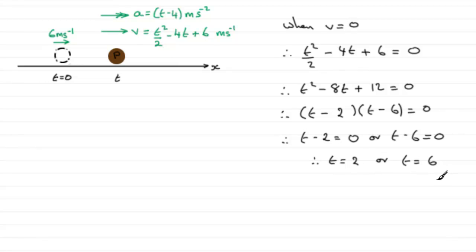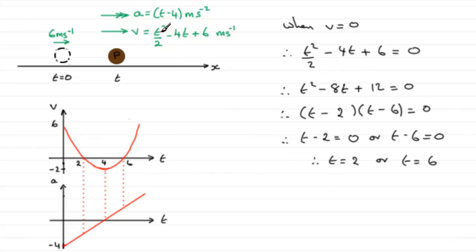It would be good to have some appreciation of what's going on here. I'm going to show you a velocity-time graph and an acceleration-time graph for the movement of this particle. For V we've got a quadratic equation — it's positive T squared so it's U-shaped. At T equals 2 and T equals 6 we've seen that V equals 0, and when T equals 0, V equals 6. There's also a point of symmetry at T equals 4, where putting T equals 4 into the equation gives V equals minus 2.